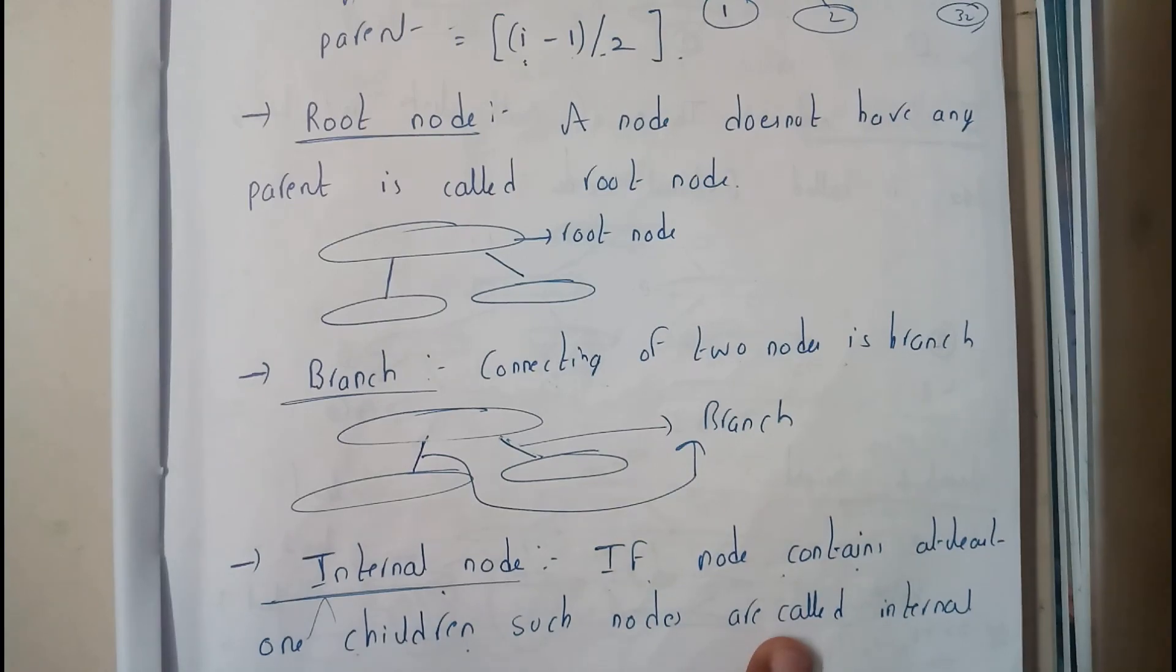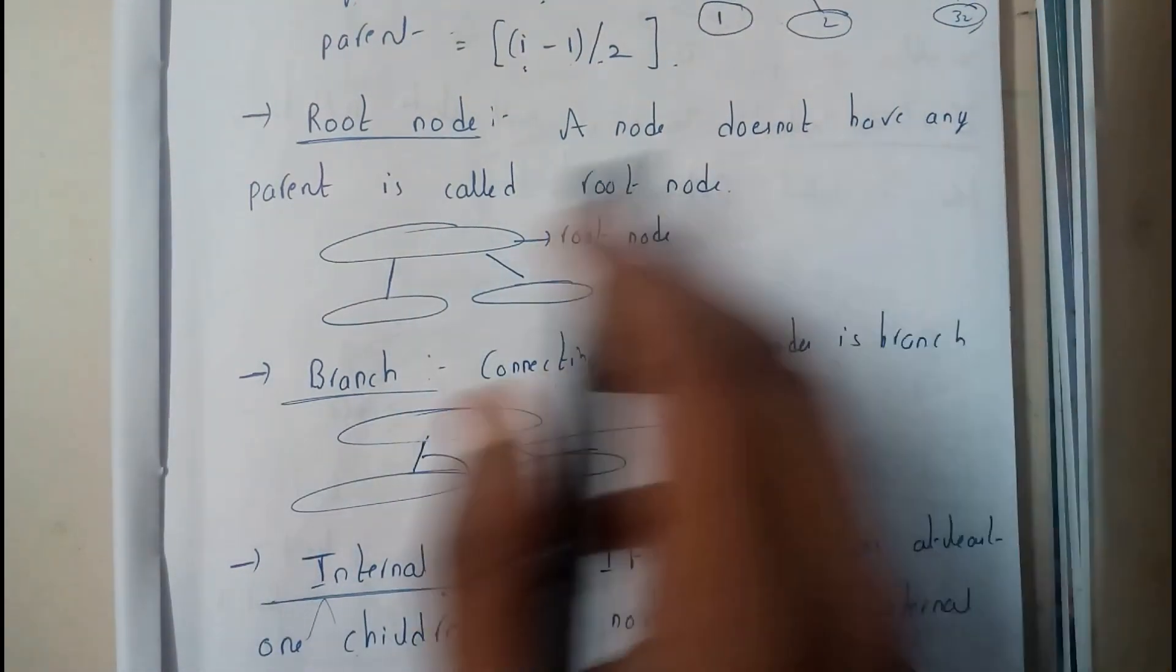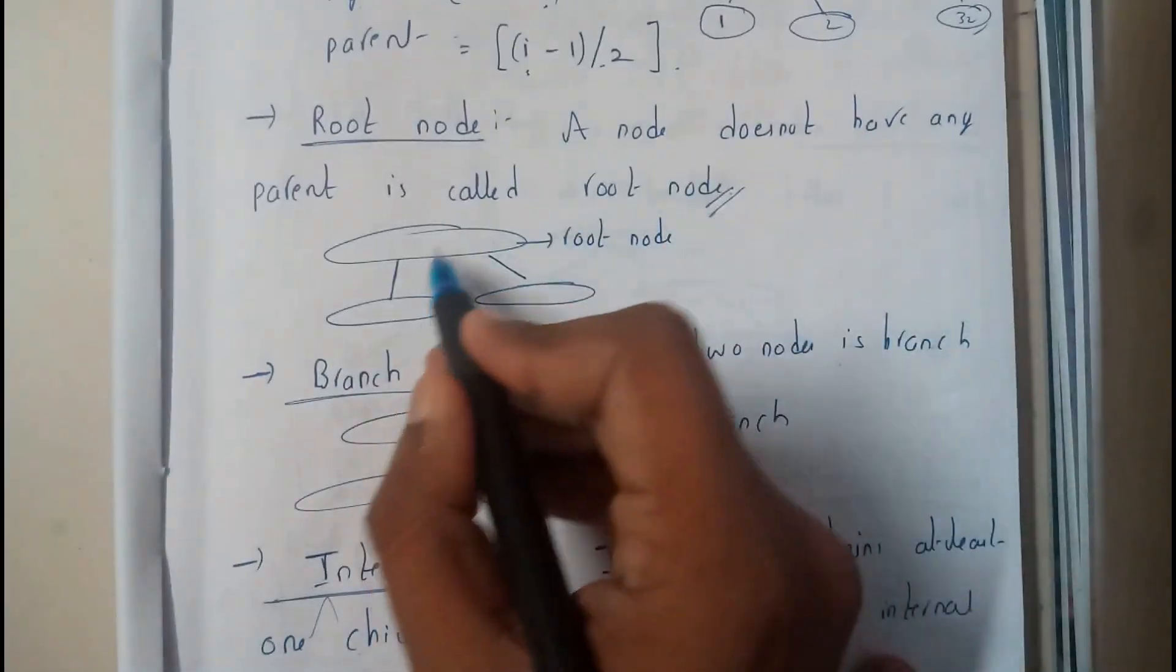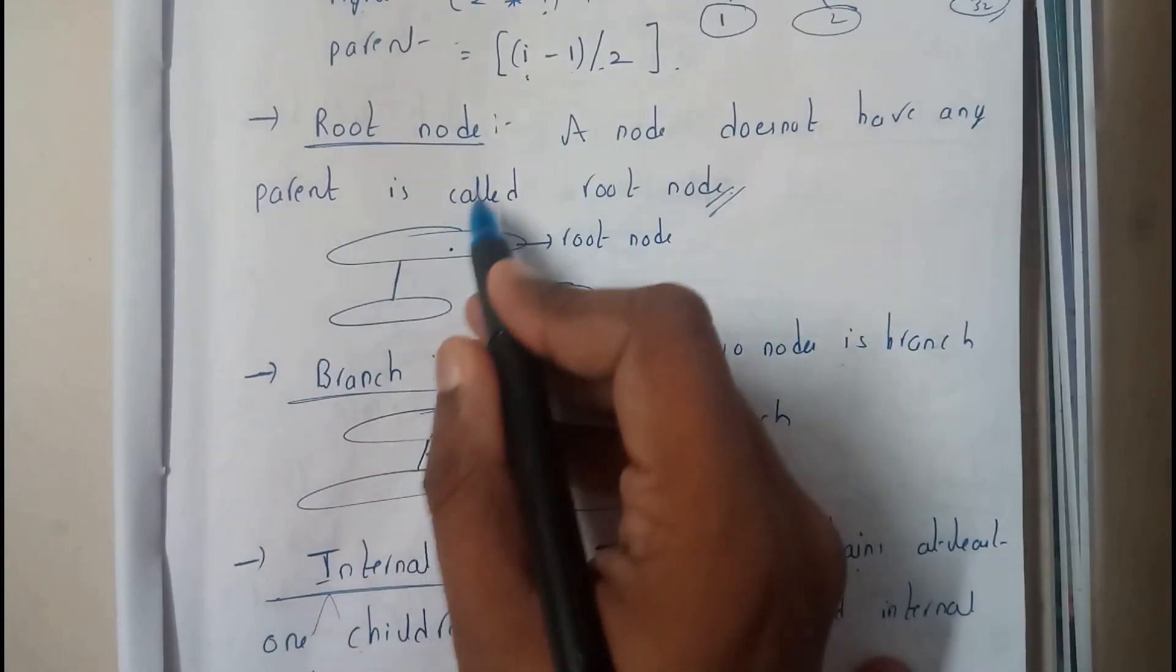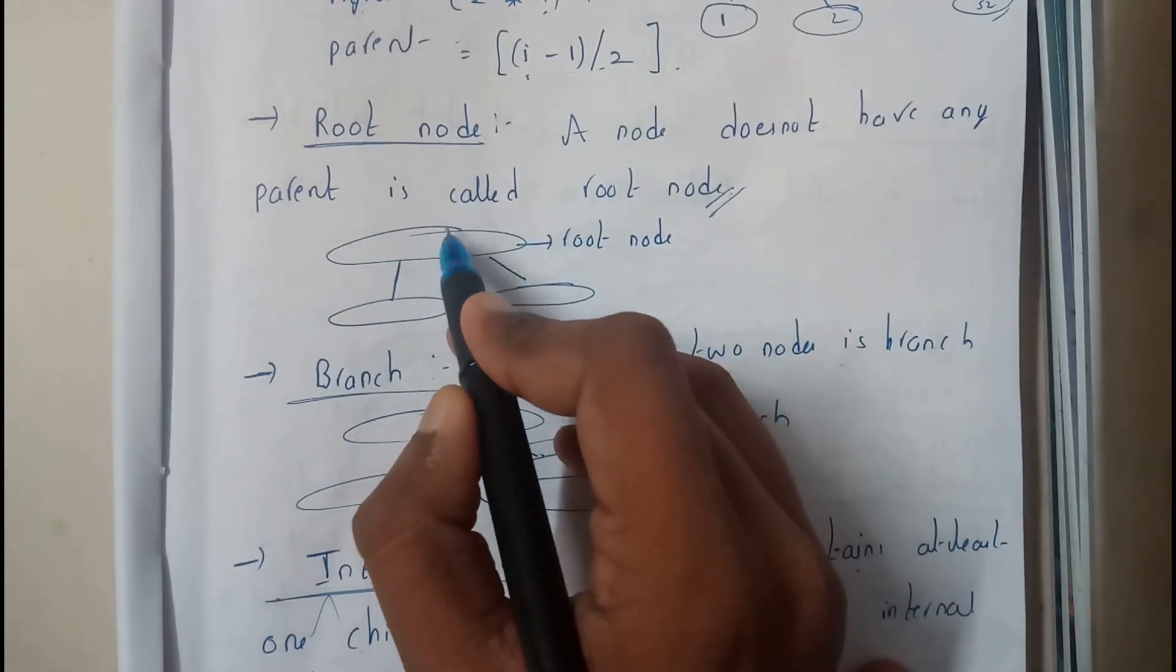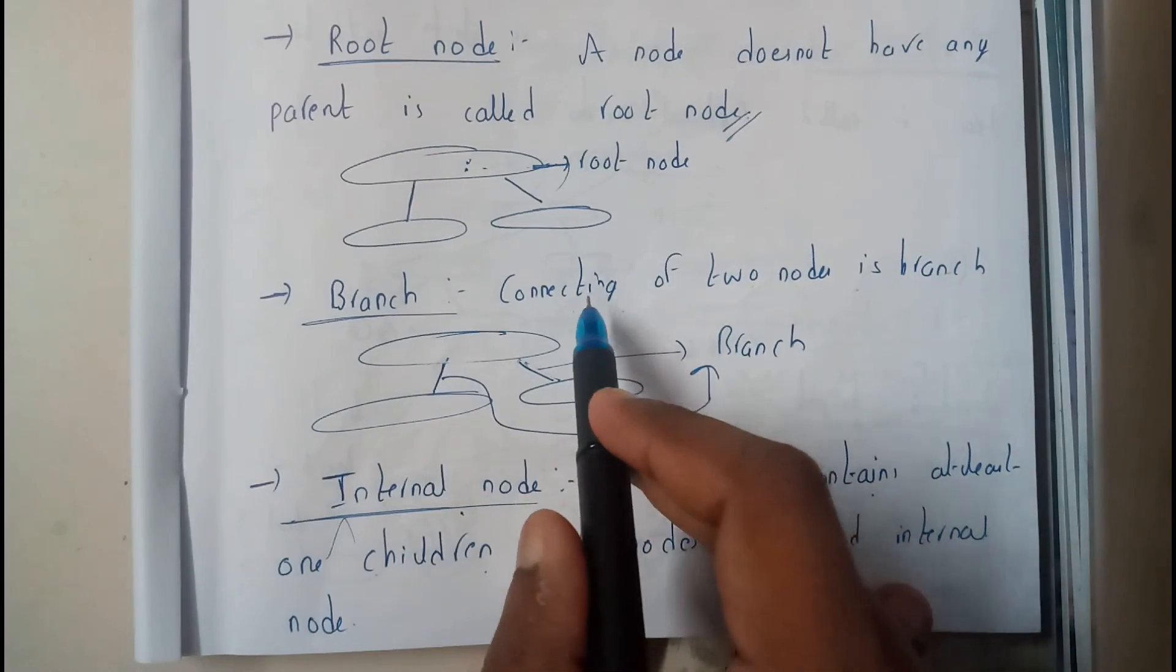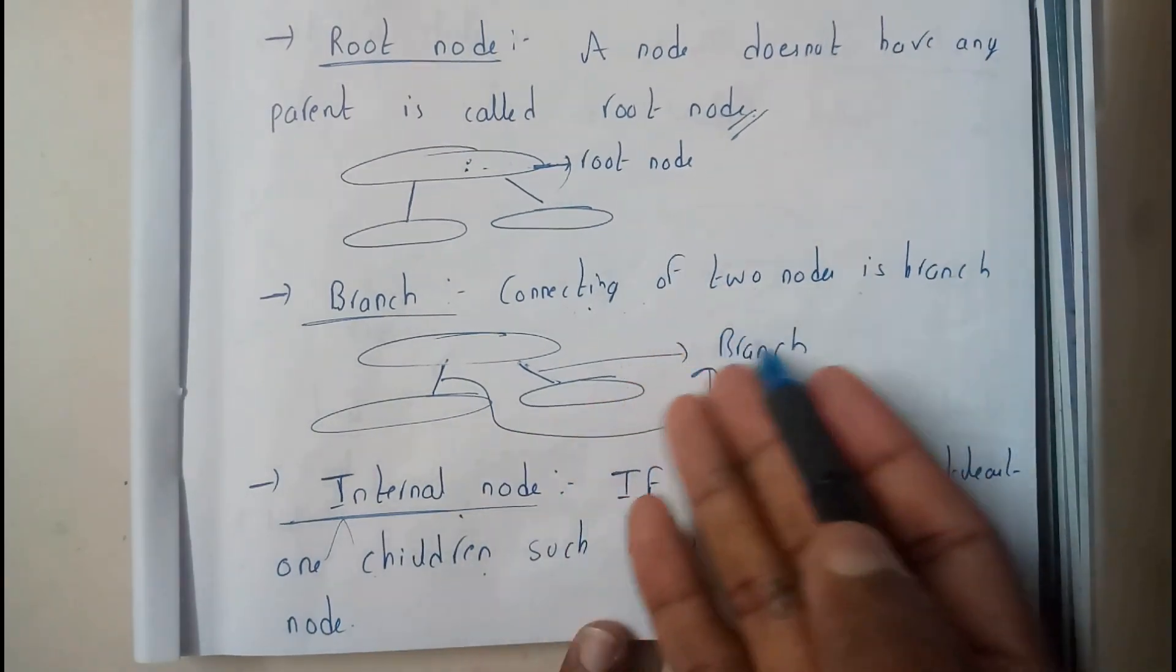So basically, first we need to know what is a root. A node that does not have any parent is called as a root. A root is a node which does not have any parent. Is there any parent for this? So this will be our root node.